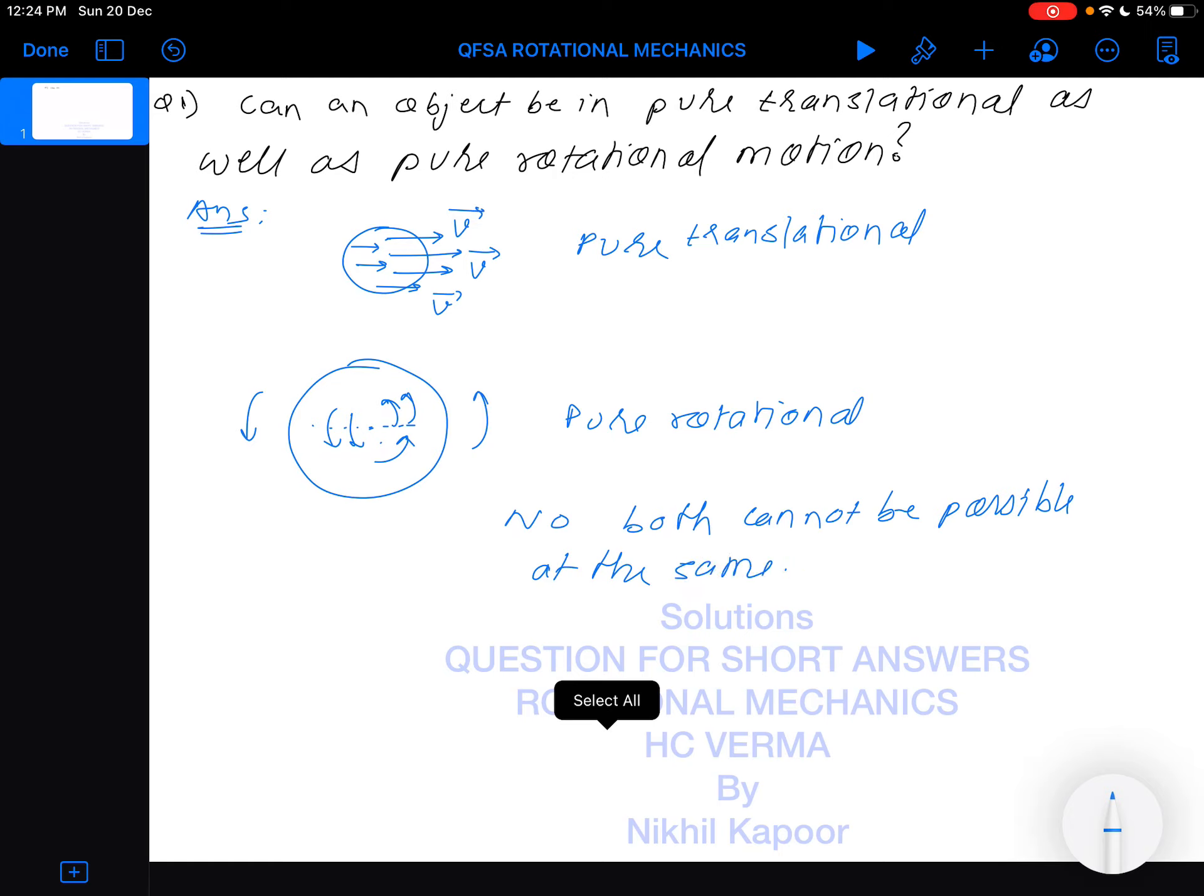Because in translational motion, the resultant velocity of all particles should be parallel, while in rotational motion, the angular speed of all particles should be the same. In translational motion there is no angular speed, and in pure rotational motion there is no net linear speed. That's why both motions at the same time cannot be possible.